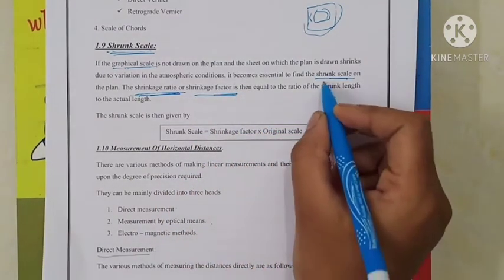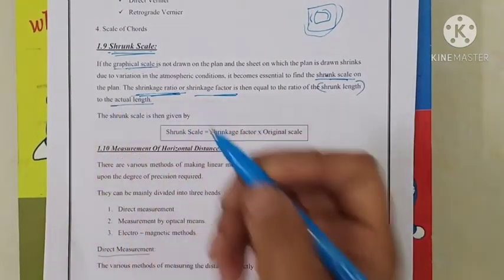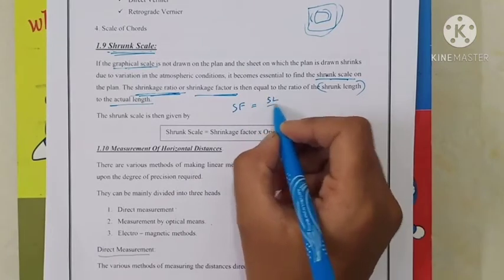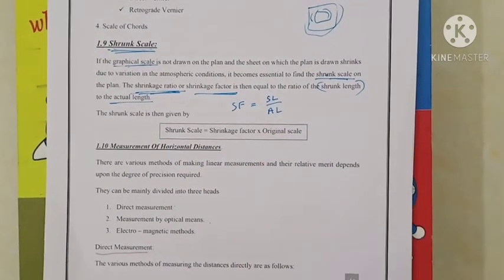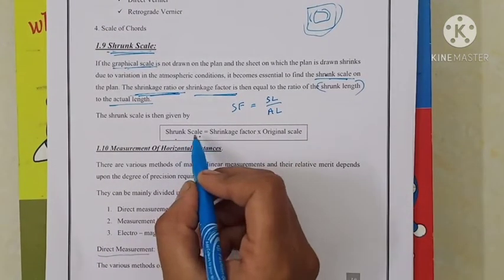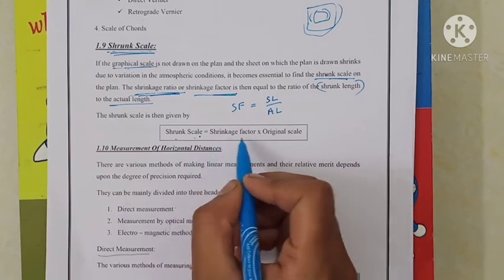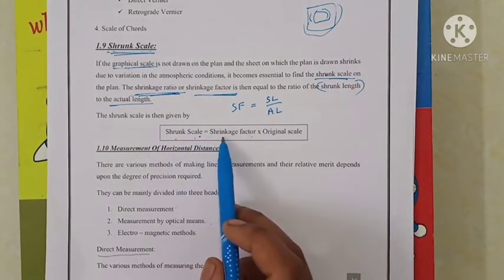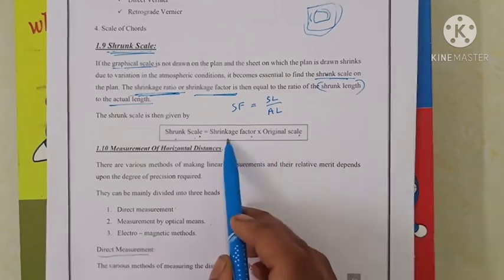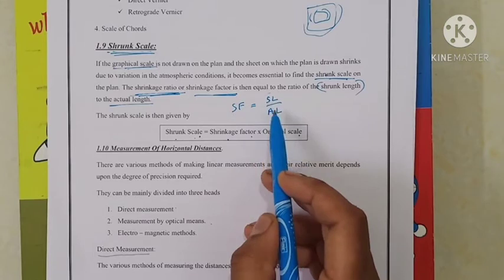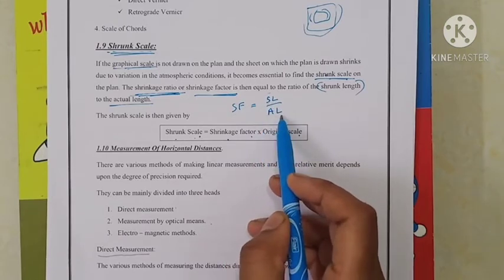The shrinkage factor is equal to the ratio of shrunk length to actual length. The shrunk scale is equal to shrinkage factor multiplied by the original scale of the plan. The shrinkage factor is obtained by the ratio of shrunk length divided by actual length.